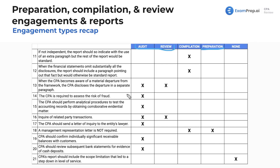The CPA is required to assess the risk of fraud — but as mentioned, if you stumble across fraud in any engagement type, you're going to bring it to someone's attention. However, actively assessing fraud risk is only required in auditing. The CPA should also perform analytical procedures to test the accounting records by obtaining corroborative evidential matter — this means getting evidence to corroborate accounting assertions, which is done only in auditing.